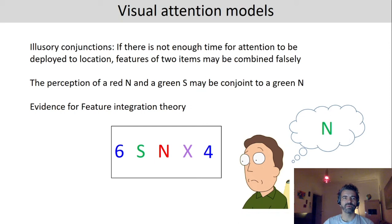There's also something called illusory conjunctions that was used as further evidence to support Anne Treisman's Feature Integration Theory. If there's not enough time for attention to be deployed to a specific location to glue two features together they can actually be accidentally combined to illusory conjunctions. So for example the perception of a red N and a green S may be conjoined to a green N. So if you present these items briefly, what a person would perceive is a green N because green of this object was combined with the letter identity of this object.